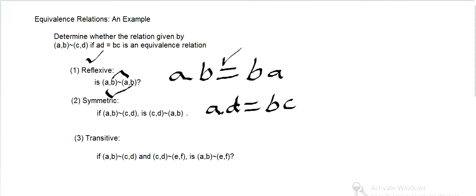Then is CD also related to AB? Which would mean is CB equal to DA?